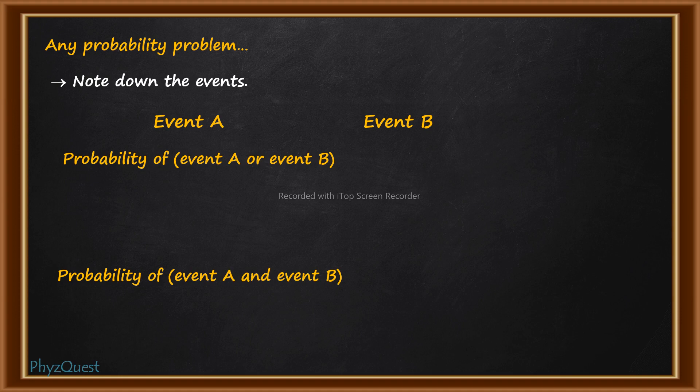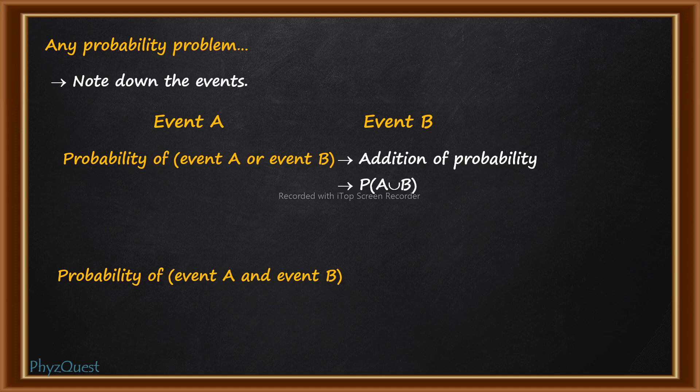Check the difference: probability of event A or event B versus probability of A and B. The key difference is the word 'or' and 'and'. In the first case, where it is mentioned that you have to find out the probability of event A or event B, you need to add the probability. This is also represented as probability of A union B. The keyword to look for here is 'or'.